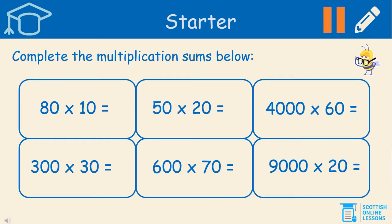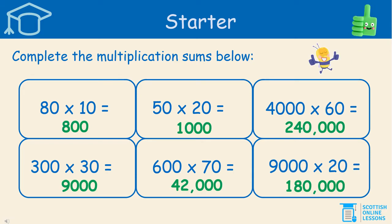Now put what you've learned in that little recap into practice in this starter task. Complete the sums below — pause the lesson now and complete this task. And here are the answers: 80 times 10 equals 800; 50 times 20 equals 1000; 4000 times 60 equals 240,000; 300 times 30 equals 9,000; 600 times 70 equals 42,000; and 9,000 times 20, the answer is 180,000. Check your own answers against those ones.